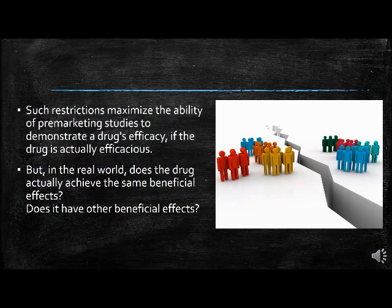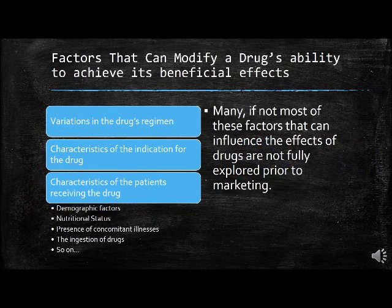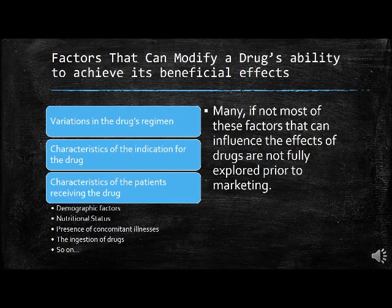But in the real world, does the drug actually achieve the same beneficial effects? Does it have other beneficial effects? Factors that can modify a drug's ability to achieve its beneficial effects include variations in the drug's regimen, characteristics of the indication, and characteristics of the patients receiving the drug — such as demographic factors, nutritional status, presence of concomitant illnesses, and ingestion of other drugs. Many, if not most, of these factors are not fully explored prior to marketing.